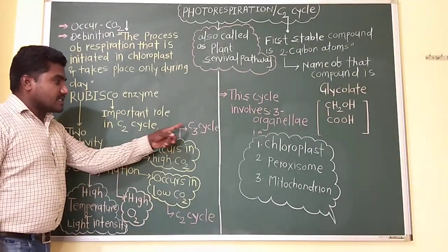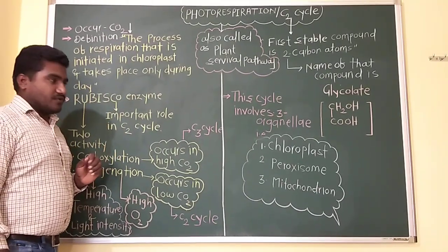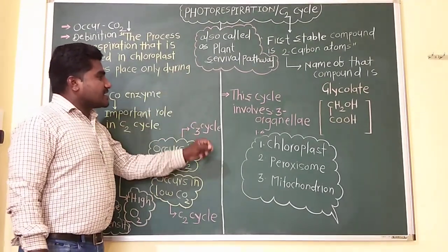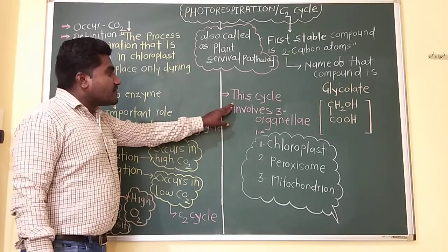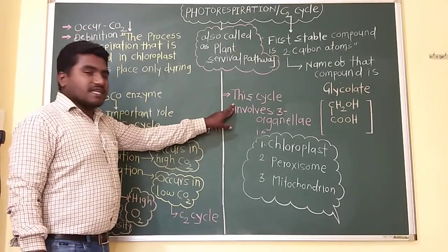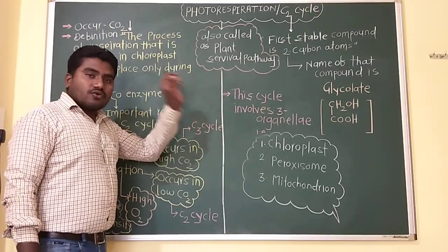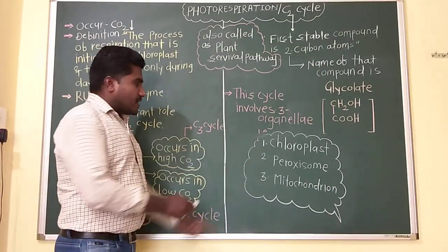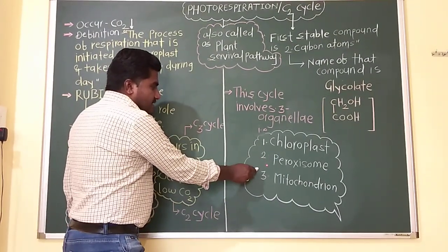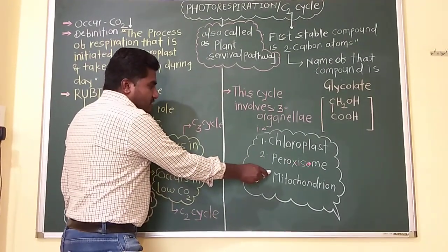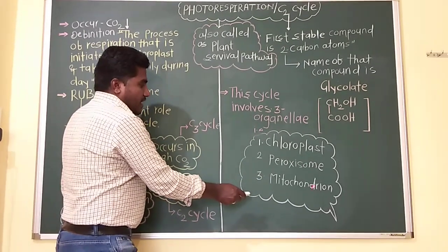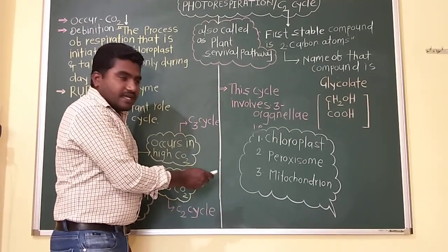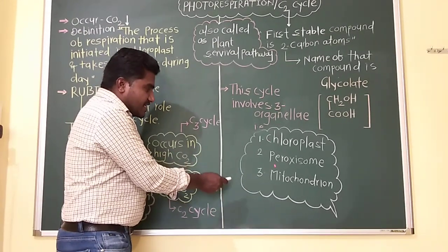Carboxylation is performed in the C3 cycle. In photorespiration, there are three different organelles involved.